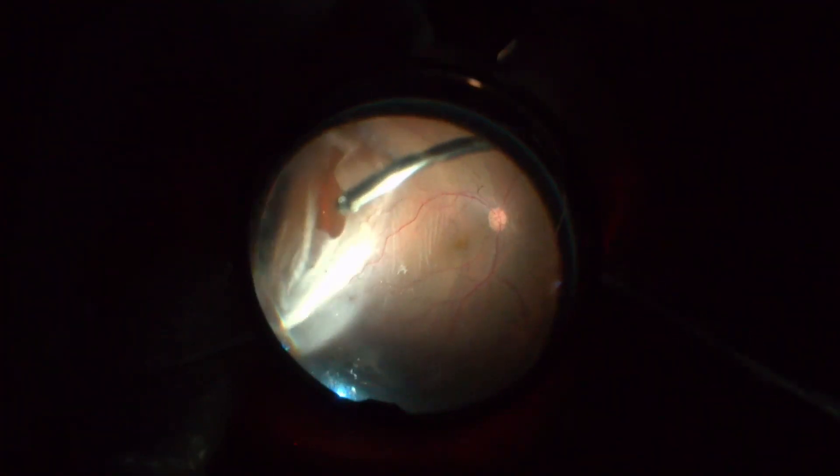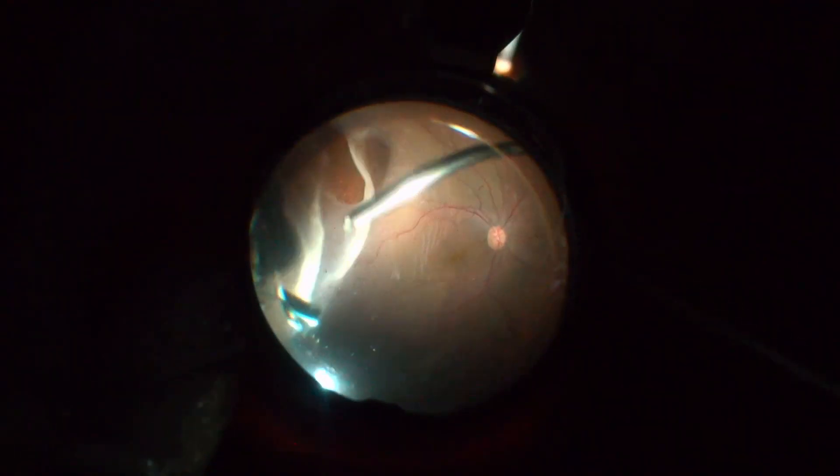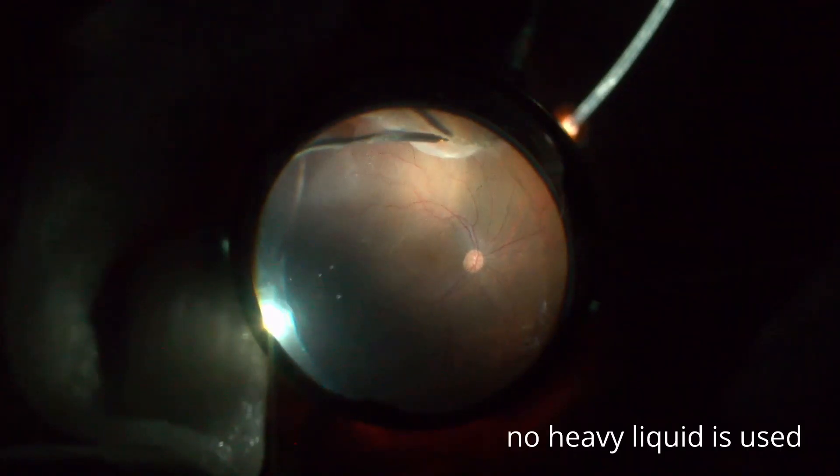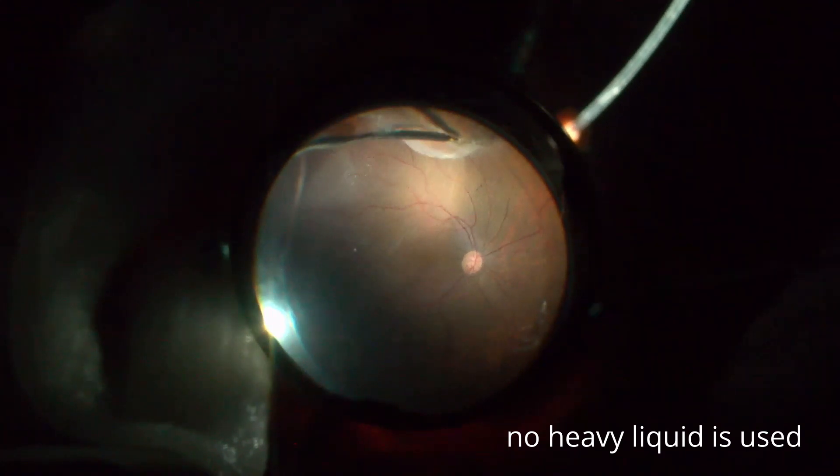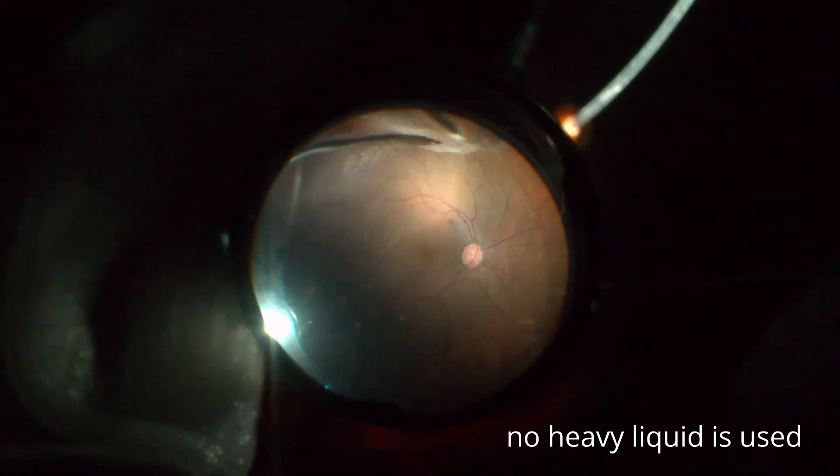Vitreous base excision in 360 degrees followed by anterior hyaloid dissection are, for my part, the most critical steps of this surgery. These procedures are very time consuming but they significantly increase, in my opinion, the success rate of retinal detachment surgery.